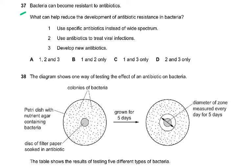Question 37. Bacteria can become resistant to antibiotics. What can help reduce the development of antibiotic resistance? Use specific antibiotics instead of wide-spectrum antibiotics, and develop new antibiotics. We do not give antibiotics for viral infections — that is wrong. So the answer is C: one and three only. You must do a culture and sensitivity test to figure out which antibiotic will kill the bacteria, then give that specific antibiotic.